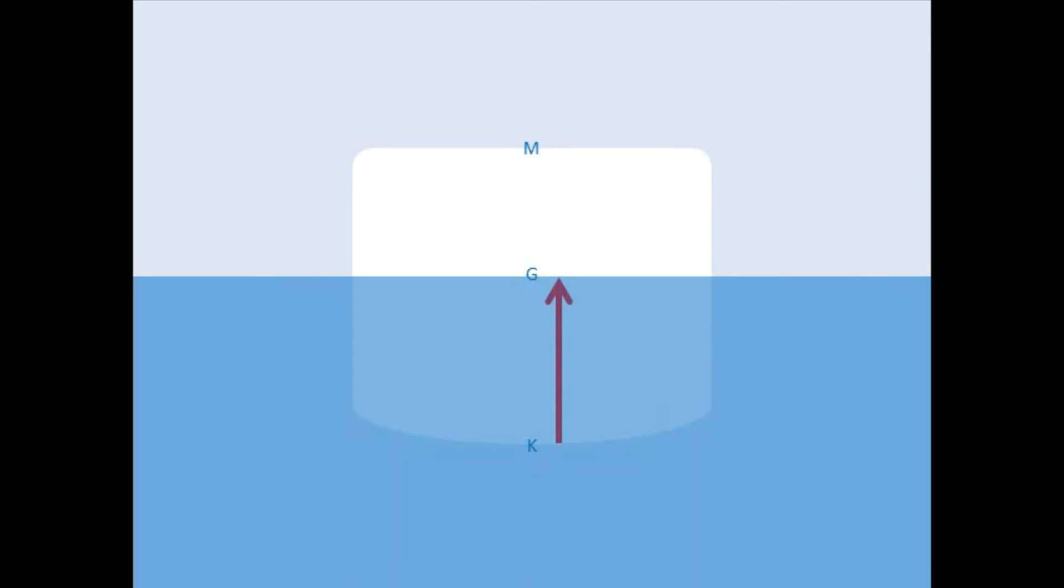KG is the height of the center of gravity above the keel. GM is the distance from the center of gravity to the metacenter. KM is the height of the metacenter above the keel.